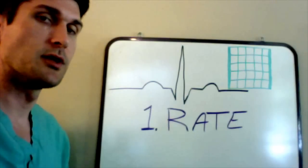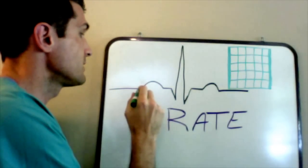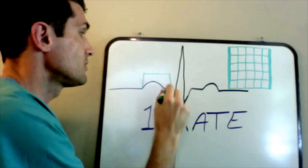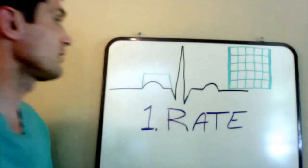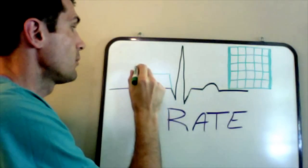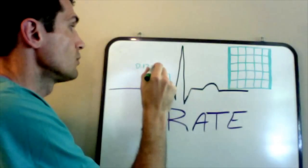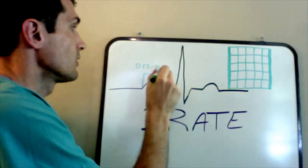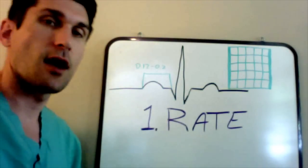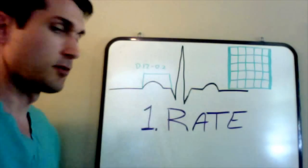Let's talk a little bit about intervals, which we'll be addressing later in our five-step process. This is the PR interval — from the beginning of the P wave to the beginning of the Q wave. The normal distance for that should be 0.12 to 0.20 seconds.